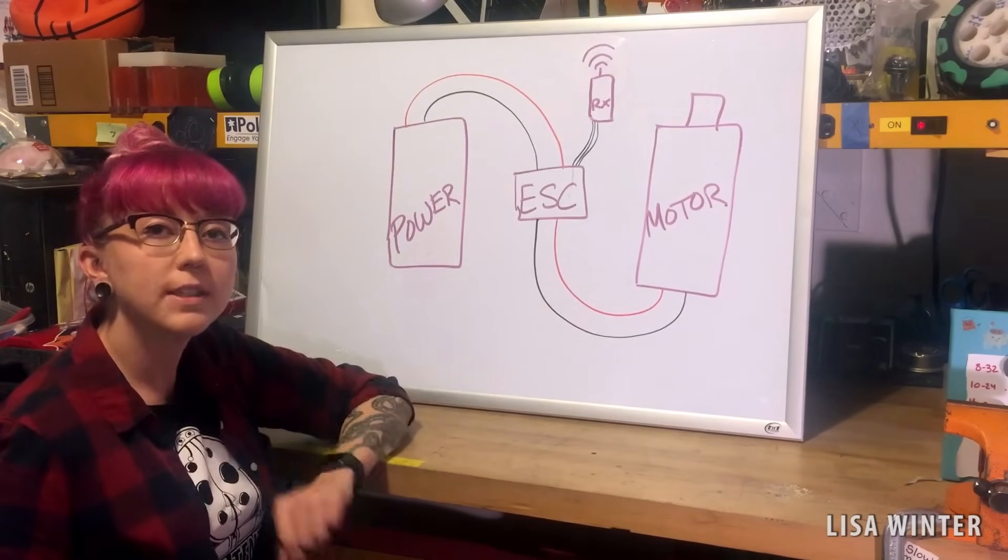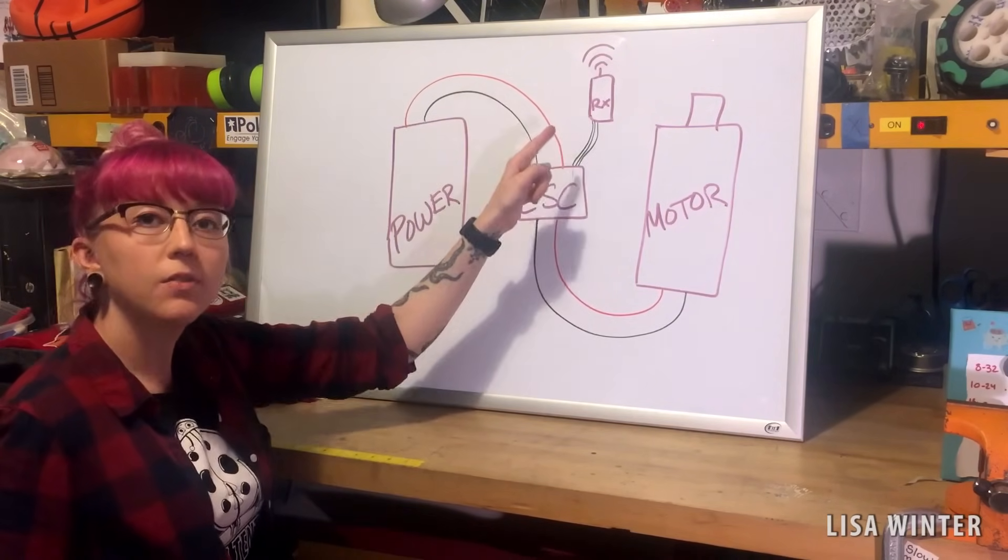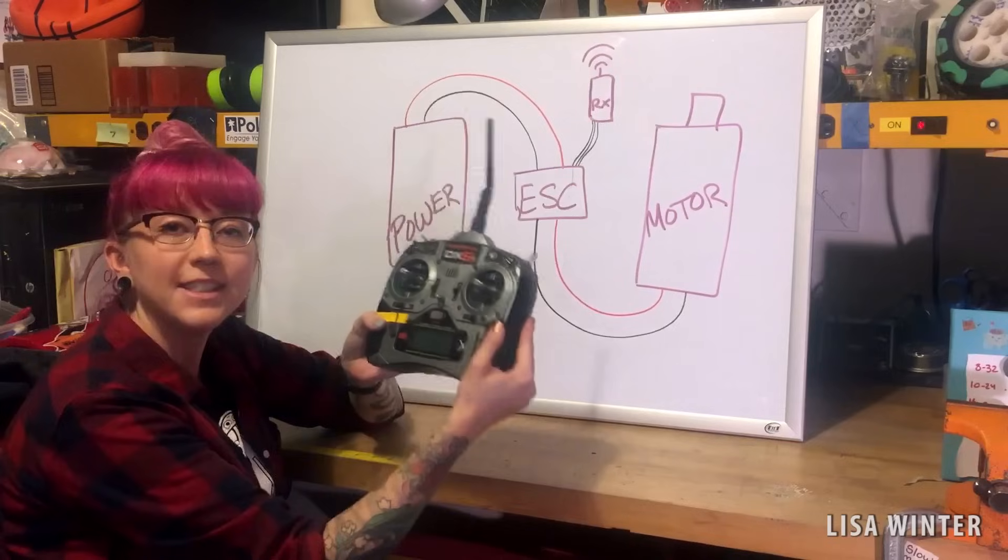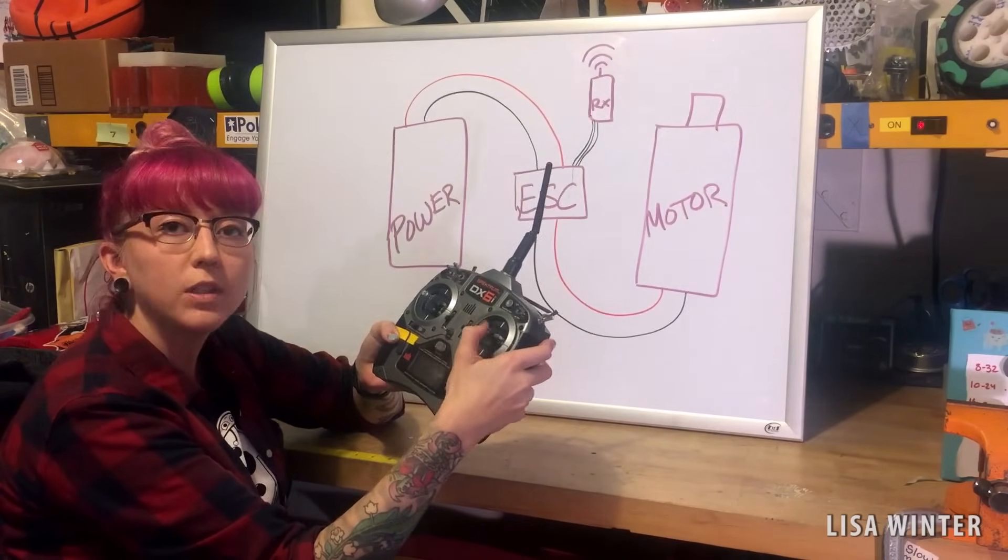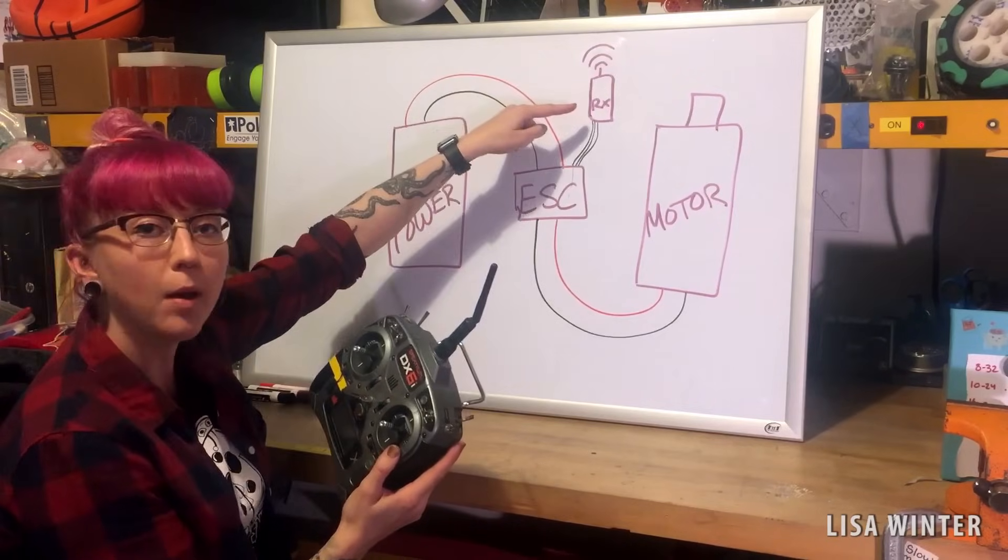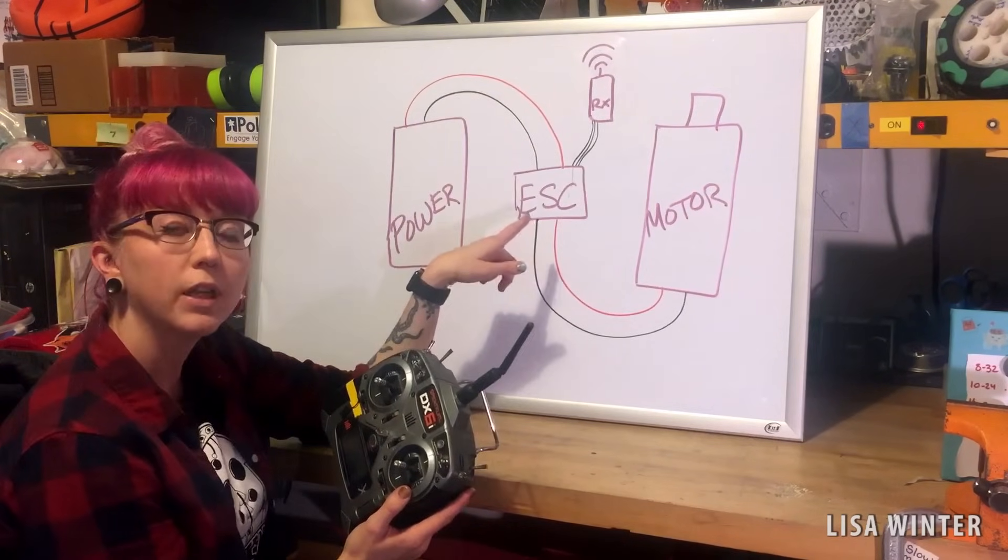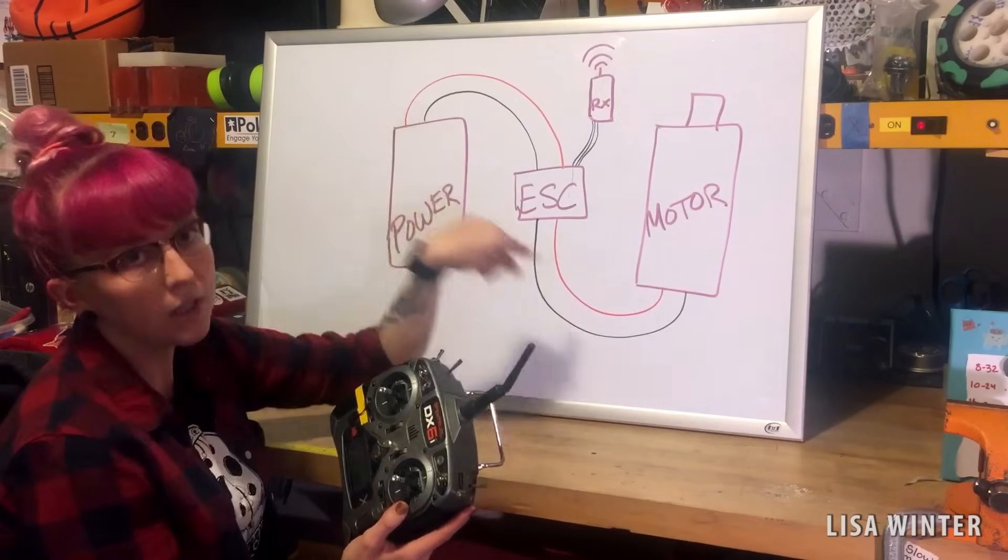The next action is to add a receiver, and the receiver receives the signal from our transmitter. So when I'm giving directions on the joystick, the receiver will pick them up and tell the speed control exactly how much power to put into the motor.